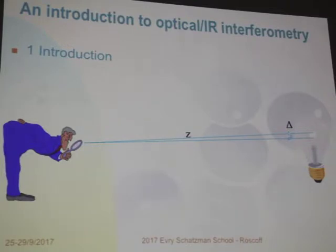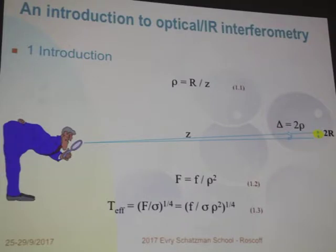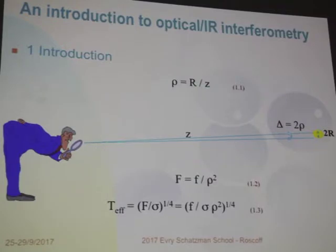Measuring the angular diameter of a star is just like measuring the angular diameter of a filament while being very far away using very simple tools. There will be an experiment carried out by you in some moments. Instead of measuring the filament diameter, astronomers are interested in measuring the angular diameter of a star. The angular diameter of a star is the linear radius divided by the distance.